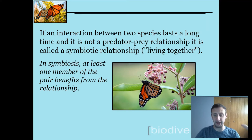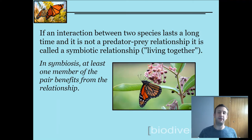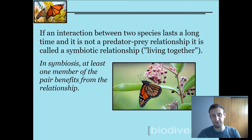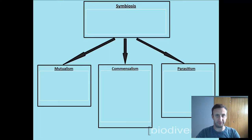In predator-prey, you've got the predator — the thing doing the eating — and prey — the thing getting eaten. So if an interaction between two species lasts a long time and is not a predator-prey relationship, it is called a symbiotic relationship. Symbiosis, or symbiotic, means living together. In symbiosis, at least one member of the pair benefits, because organisms would not keep up the relationship if there were no benefits — it would not be advantageous.